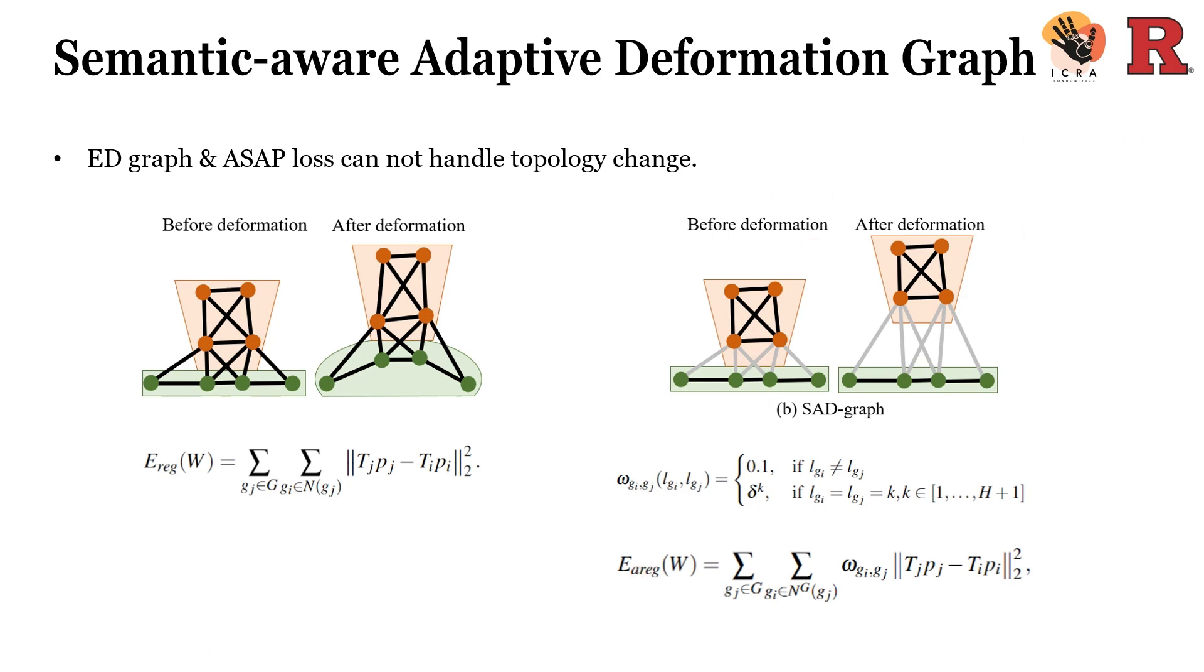This deformation graph will store semantic labels for each node. And it will apply a much weaker constraint between nodes that currently belong to different semantic classes. This new adaptive regularization term helps Monostar to deal with topological changes.